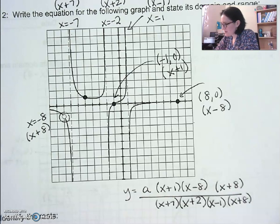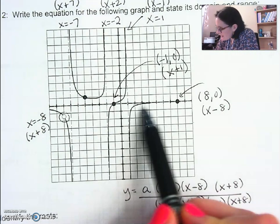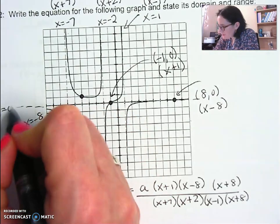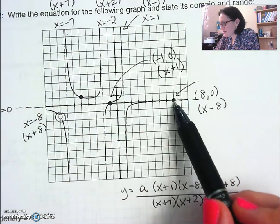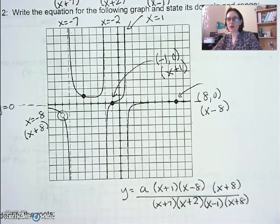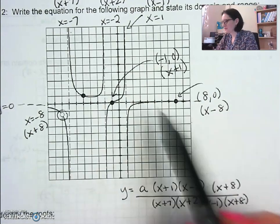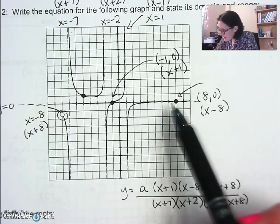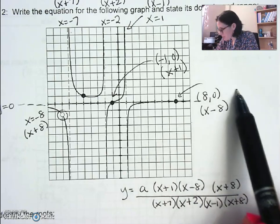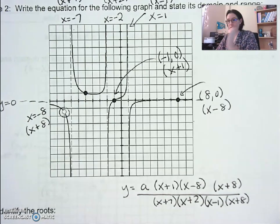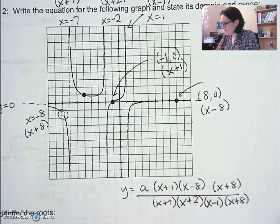Looking at horizontal asymptote information: I can tell from the graph behavior that there's a horizontal asymptote at y = 0. If you're wondering how there can be a root on that axis and an asymptote on the axis — horizontal asymptotes only determine end behavior as x gets very large or very small. It's okay for a graph to cross the asymptote; when it does, it passes through and then as it goes out to infinity it's brought back closer and closer.